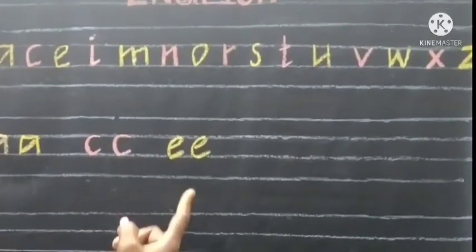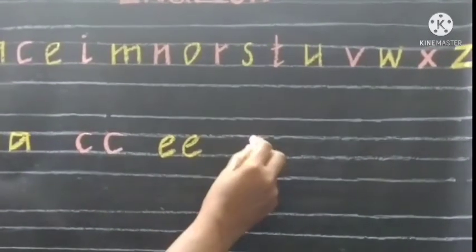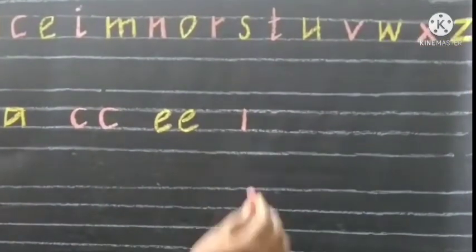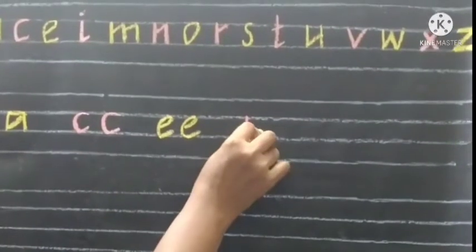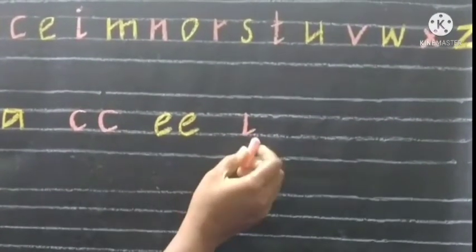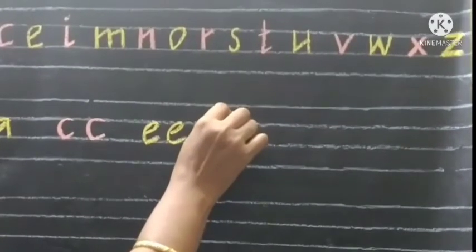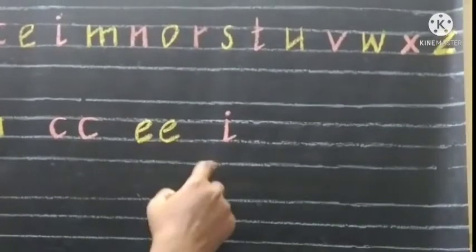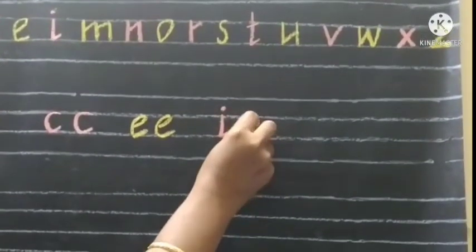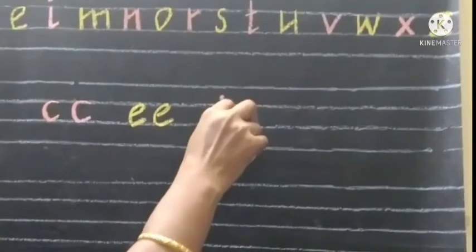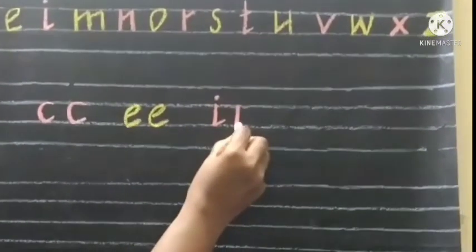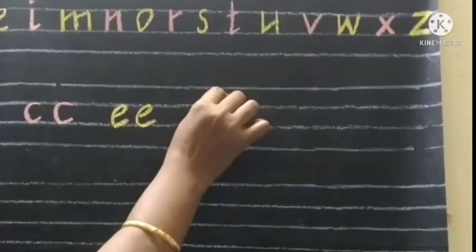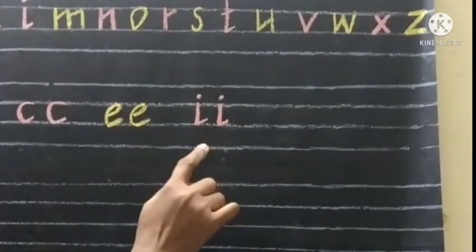Now we are going to write I. Just write a line with slant ending, then a dot on it. This is I. Write once again: a straight line with slant ending, just a dot on it. This is I.